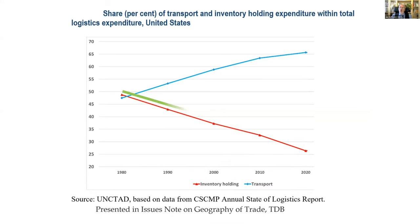Some long-term trends: this is data from the United States on the share of transport versus inventory holding expenditure within total logistics expenditure. In the 1980s there was more expenditure on inventory holding than transport. Today there's twice as much expenditure on transport as on inventory holding. Transport share has increased not because transport became more expensive — on the contrary, it's become cheaper and more energy efficient — but because it's more efficient, more just-in-time deliveries, so we buy more of it.